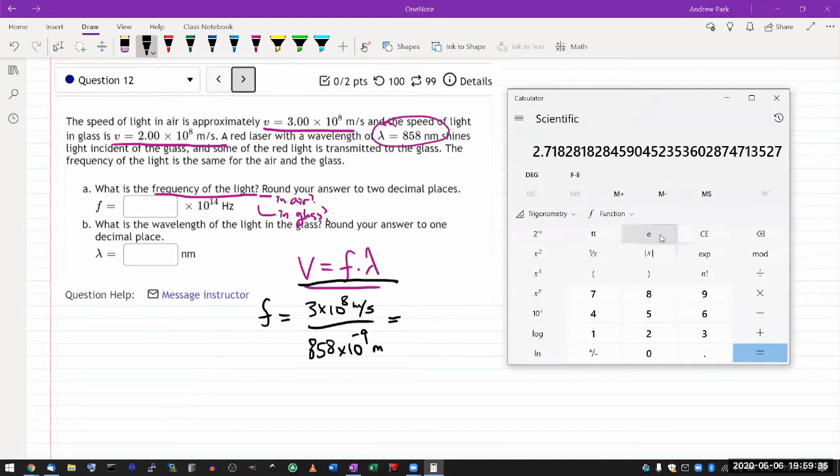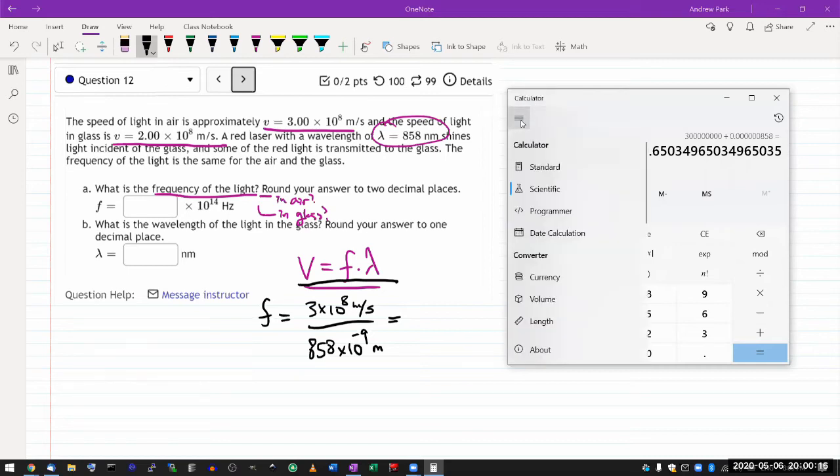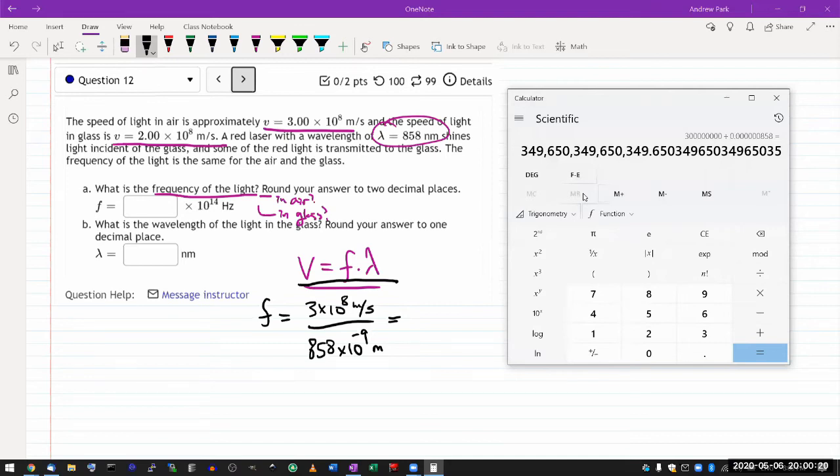Let me plug in the numbers here. Three to the power of eight divided by 858 times 10 to the power of minus nine. I need to learn how to use this calculator better. Divide by 858, and the way to do times 10 to the minus sign is exponent, type in nine first, and then change the sign. How do I change this to scientific notation? One thing I do know is I only need a coefficient in front of times 10 to the 14, so let me divide by 10 to the 14.